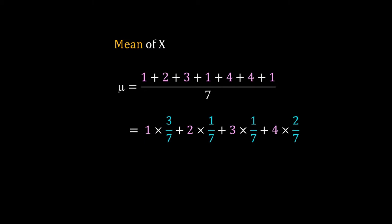These fractions 3/7, 1/7, 1/7, and 2/7 are the frequencies of 1, 2, 3, and 4 in the data. So we can say: to get the mean, multiply a number with its frequency and then sum over all the numbers.